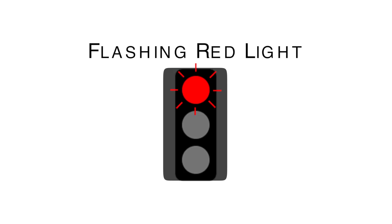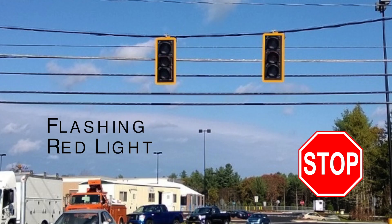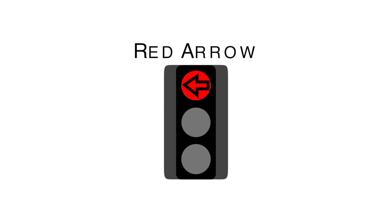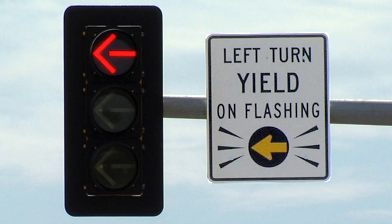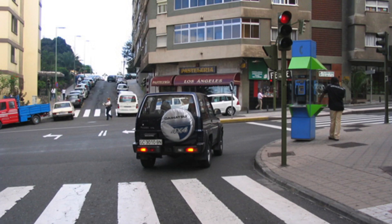Flashing red: A flashing red signal is treated the same as a stop sign — come to a complete stop before moving ahead or turning. Red arrow: A steady red arrow means to stop and remain stopped until the signal changes, except for allowed turns on red. The same turns allowed for a steady red signal are allowed for a red arrow.